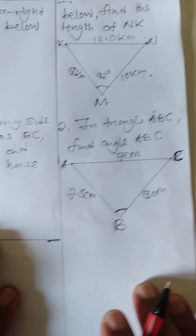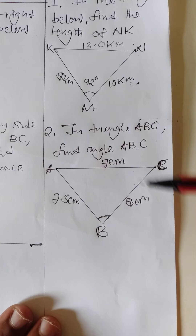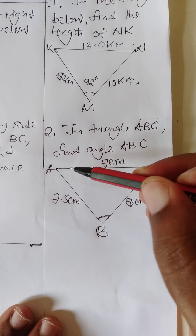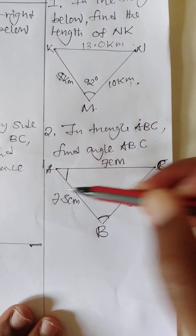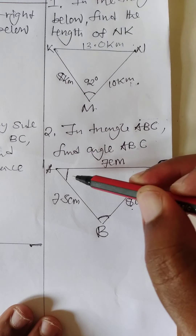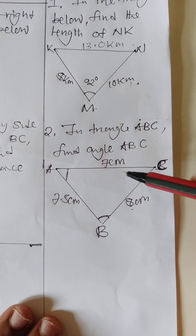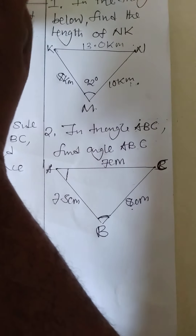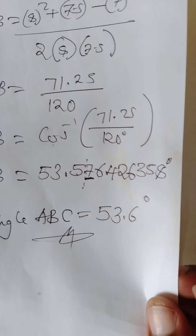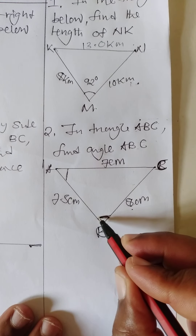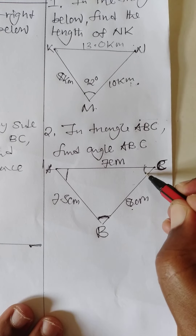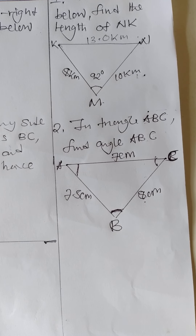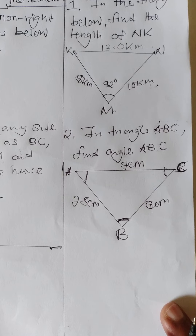One important observation about this triangle: the sides are 8, 7, and 7.5. The angle opposite the longest side (8) is the biggest angle of the three. The angle opposite the shortest side (7) is the smallest. So the 53.6 degrees we found corresponds to side 7 and is indeed the smallest angle, followed by the angle opposite 7.5, with the largest angle opposite side 8.